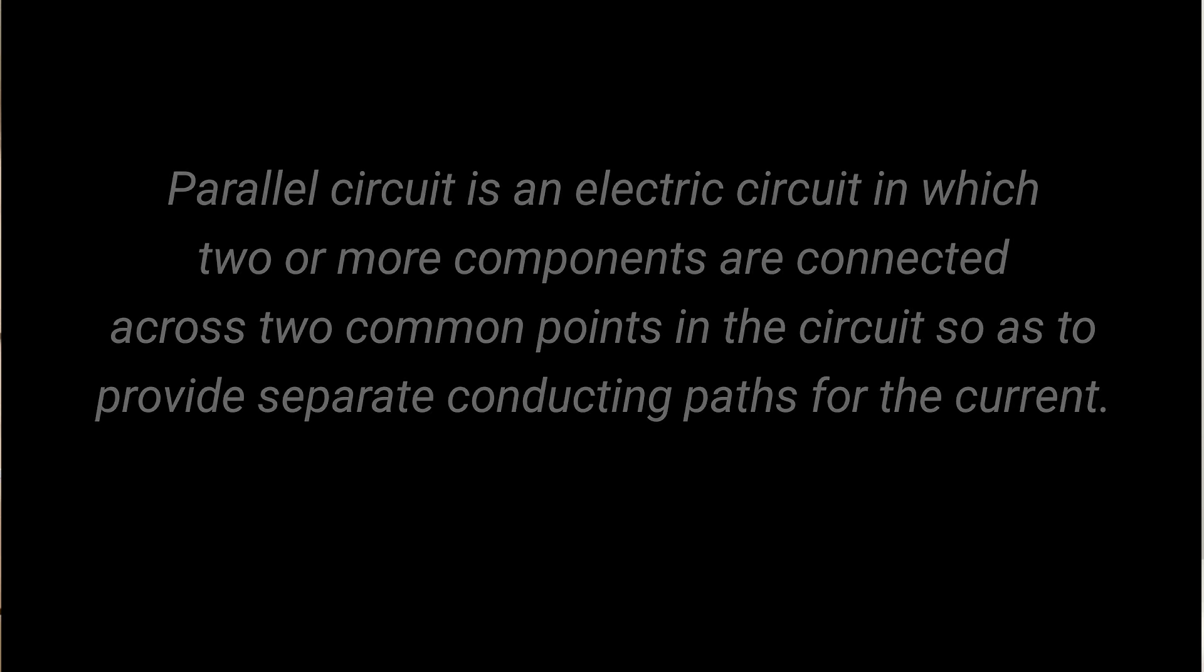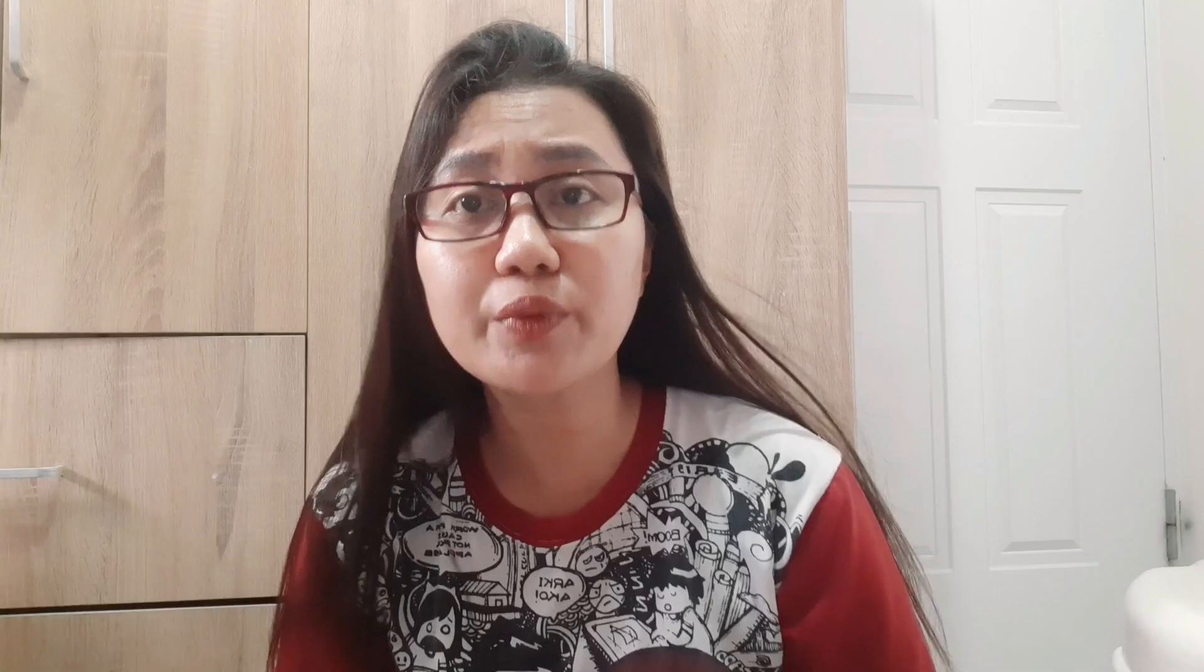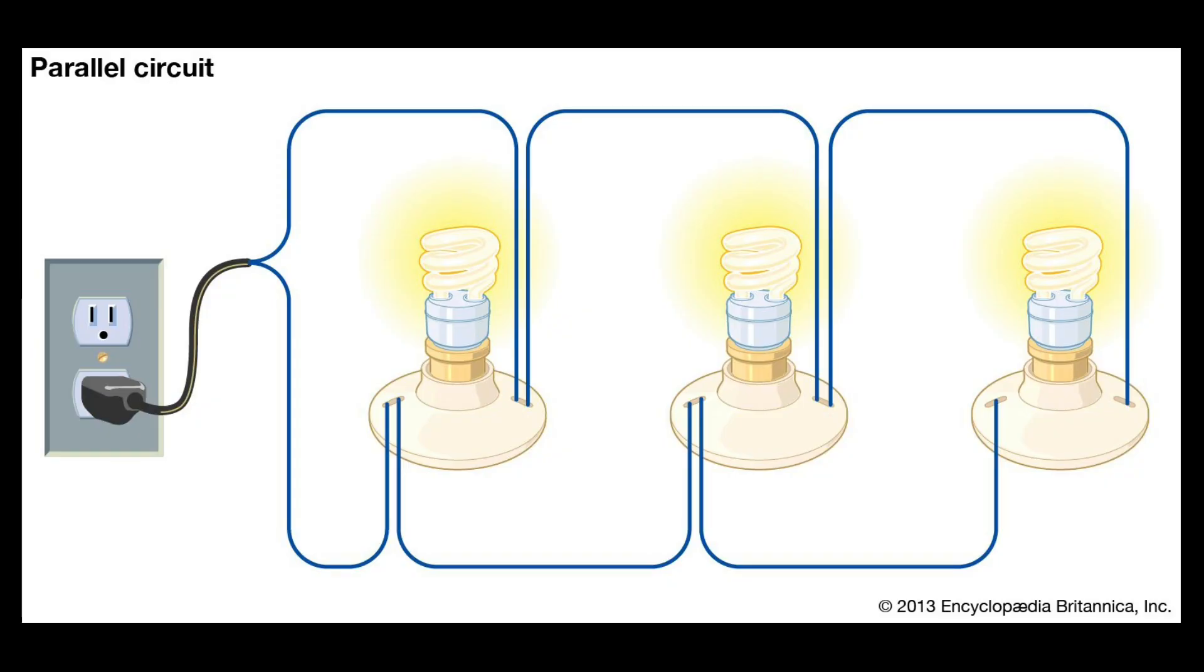So when one bulb goes out, all the other bulbs will still be working. This is how a parallel circuit looks in a diagram. So it's like they are having multiple wires. Usually with parallel circuit, the advantage is when one breaks, unlike in series circuit where all bulbs will break.